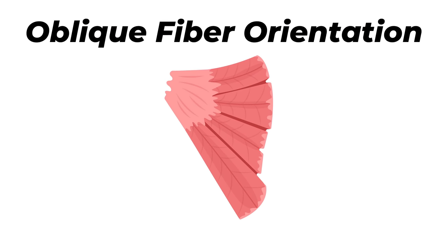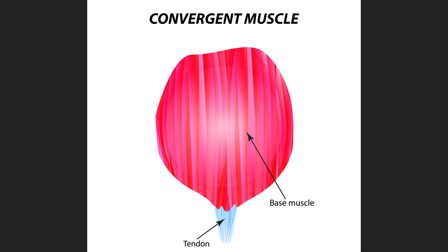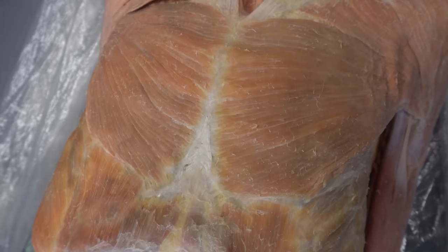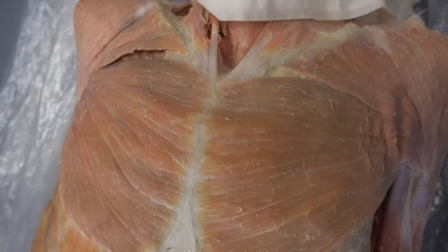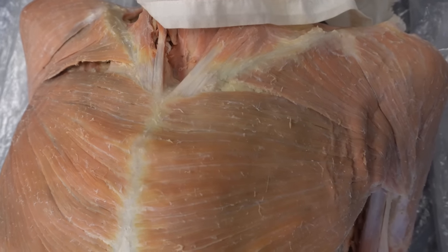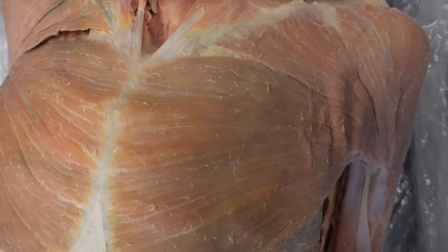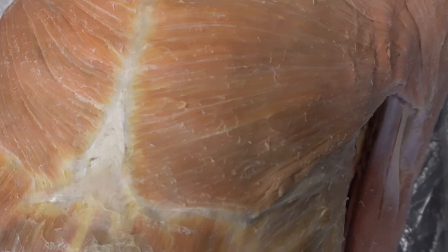Next we have the oblique fiber orientation muscles, where fascicles go at an angle relative to the longitudinal axis of the muscle. The first type is the convergent muscle. A great example is the pectoralis major — you can see its really wide attachment on the sternum and clavicle, with all those fibers fanning and converging together and then attaching at the intertubercular groove of the humerus. It's a really cool muscle to look at.